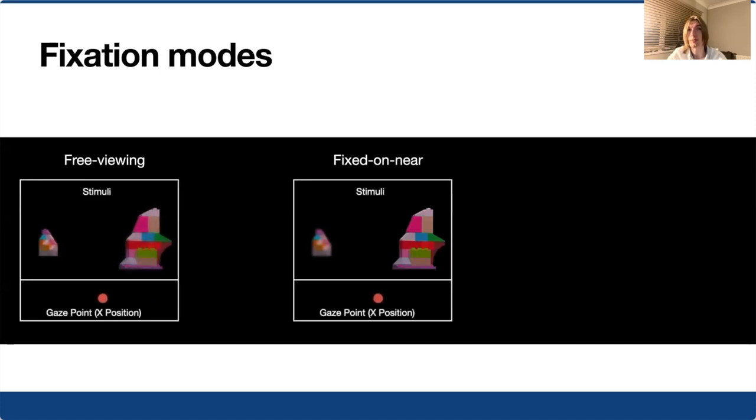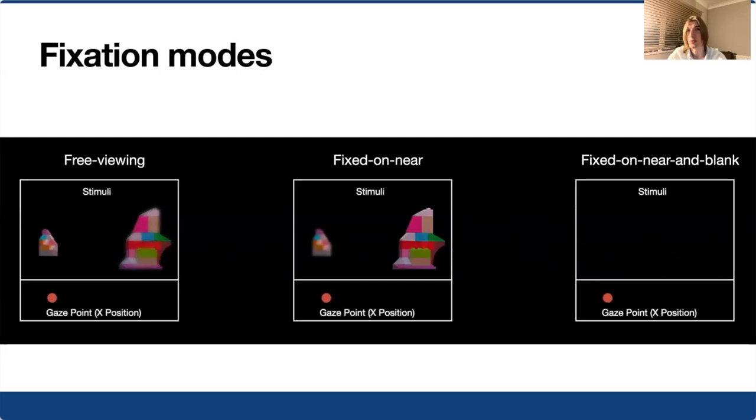So we added another session to our experiment, the fixed-on-near session. In this session, the near object was always in focus. Observers were instructed to fixate only on this one object when forming their judgment. This instruction, however, raised the prospect of observers cheating and forming their judgment having fixated on the out-of-focus object. And so we added another session, the fixed-on-near-with-blanking session. In this session, observers were instructed to fixate on the near object, and when their gaze deviated from this object, the screen was blanked. These sessions are illustrated in the figure below.